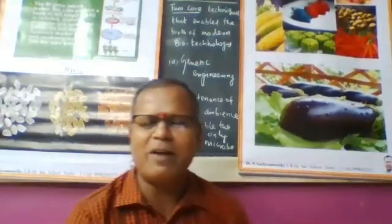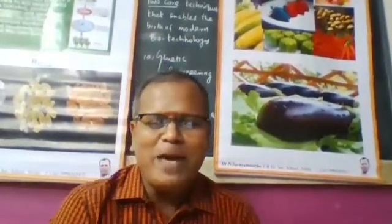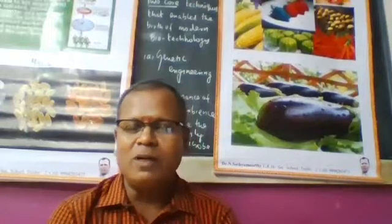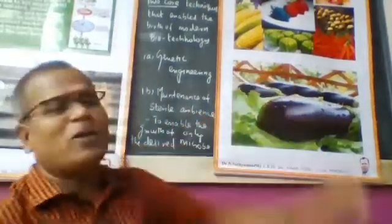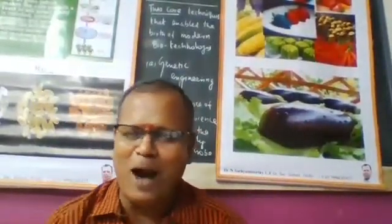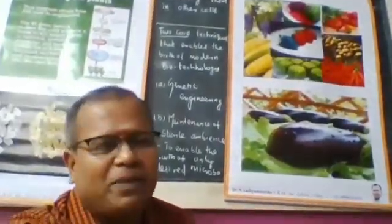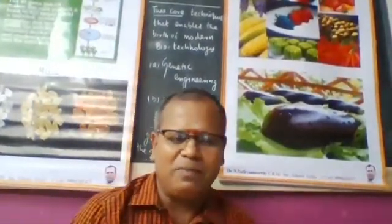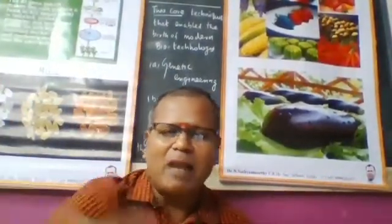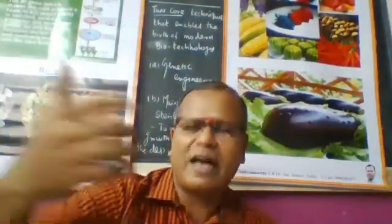Genetically modified fruits and crops include corn varieties such as sweet corn and strawberry corn, which come in different colors. Watermelon is another example. These are all genetically modified organisms produced through genetic engineering and biotechnology.